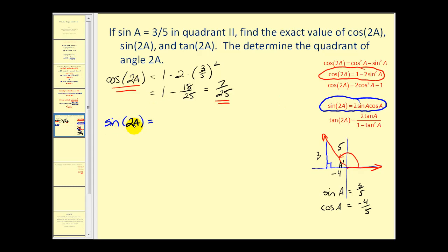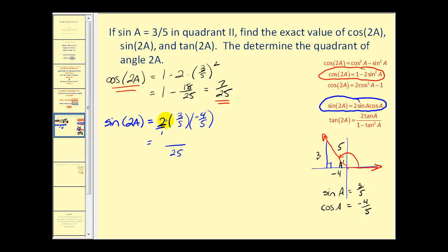Going back to sine of two A, we have two times sine A times cosine A, which is two times three-fifths times negative four-fifths. The denominator is twenty-five, and two times three times negative four gives negative twenty-four. So the sine of two A equals negative twenty-four twenty-fifths.